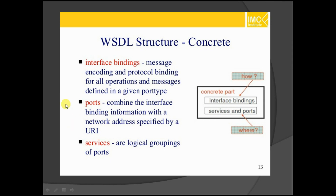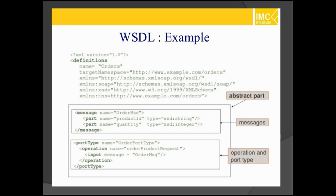The second element is port, which combines the interface binding information with a network address specified by a Uniform Resource Identifier. One more element is services, which is a logical grouping of ports — different ports will commence here. Let's see an example. Here this refers to the abstract part — the entire content specified here is called the abstract part.